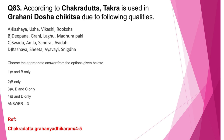Question number 83: According to Chakra Datta, Takra is used in Grihani Doshachikitsa due to the following qualities. A: Kashaya Ushna Vikashi Ruksha. B: Deepana Grahi Laghu Madhura Paki. C: Swadhu Amla Sandhra Avidahi. D: Kashaya Shita Vyavai Snigtha. Here A, B, C are correct. The correct answer is option 3. These Takra gunas are the same as those mentioned in Charaka Chikitsa 15th chapter, Grihani Doshachikitsidha Adhyaya.